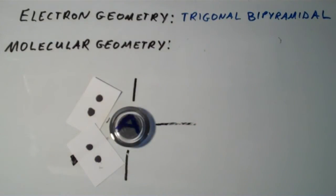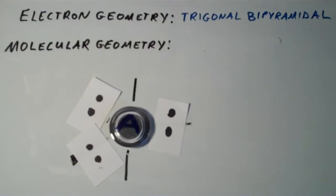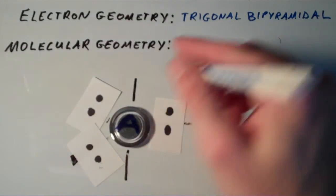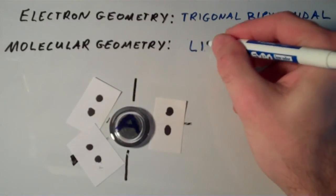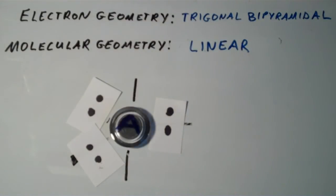If there's a third lone pair, which is the case with a few molecules, that third lone pair is also going to occupy this third equatorial position giving rise to a shape that should be familiar. And it goes back to linear. All right, so that does it for all of the molecular geometries associated with five electron groups. Now let's look at the six electron group scenario.